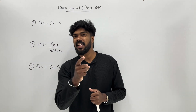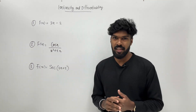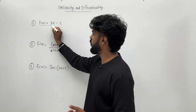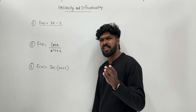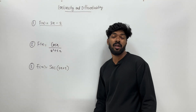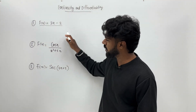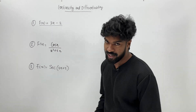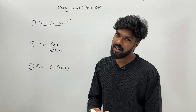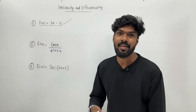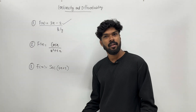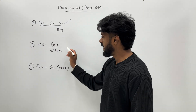Let's check the continuity of the function. f of x equals 3x minus 2. This function is continuous. The reason is that this function is a polynomial function. So it is continuous.